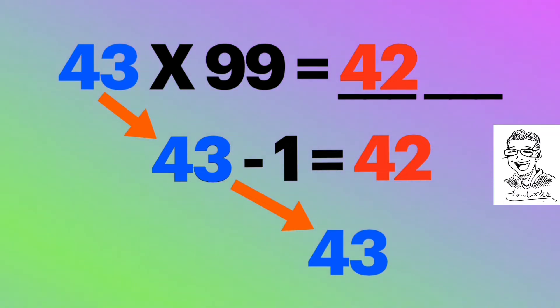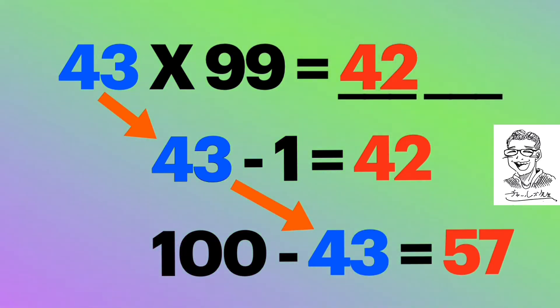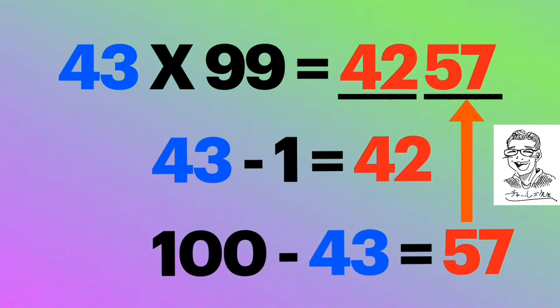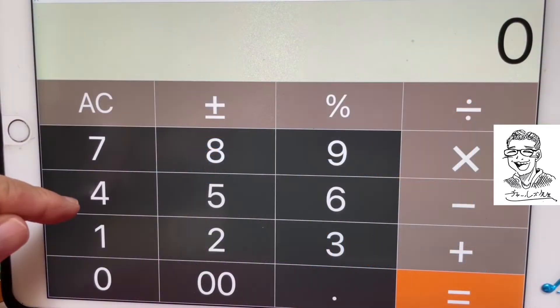And then you are going to deduct 43 from 100, or 100 minus 43 equals 57. And that is the last two digits of the number.